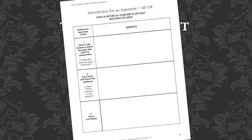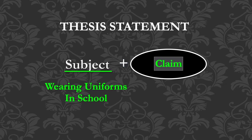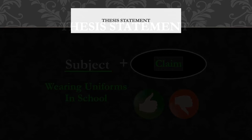In argumentation, the thesis has two parts: a subject and a claim. The subject is the topic or issue of your argument — perhaps the issue is wearing uniforms at school. What follows is your claim. This is your opinion about the issue, whether or not students should be required to wear uniforms.